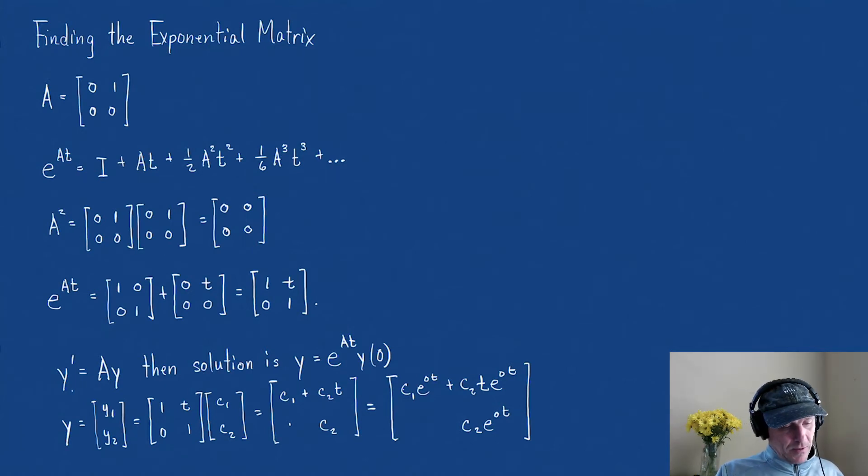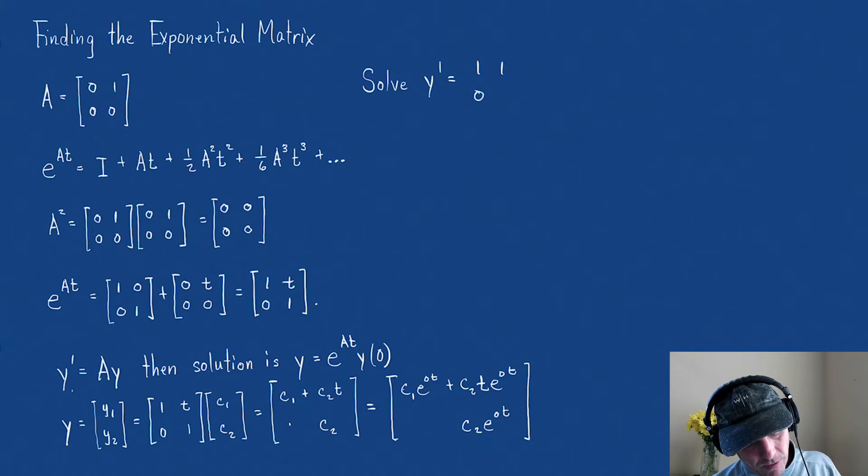All right, let's try another example. Let's just change the matrix of A just a little bit. We're going to solve y' = Ay, this time A is [[1,1],[0,1]] times y. Now, if I was to do this with eigenvalues and eigenvectors, the difficulty here is notice that I'm going to have repeated eigenvalues of 1 and 1. And so the problem with that then is I'm going to have a resonant solution.